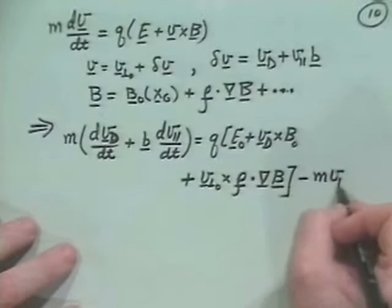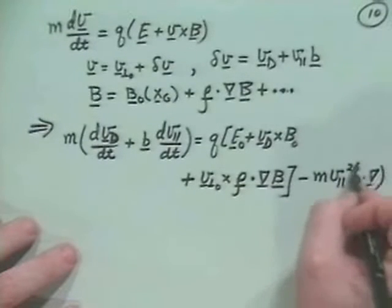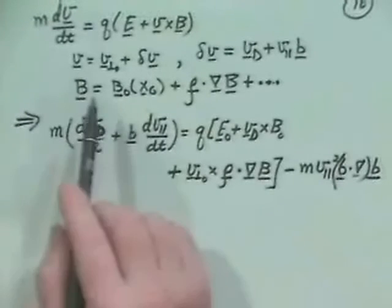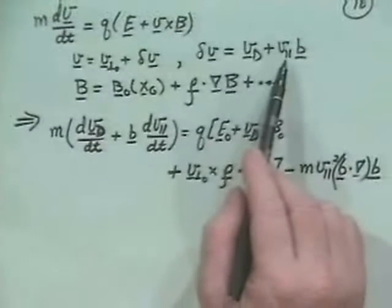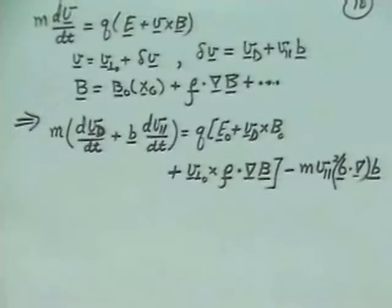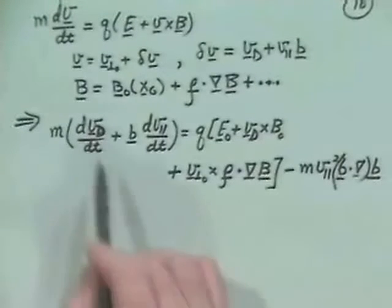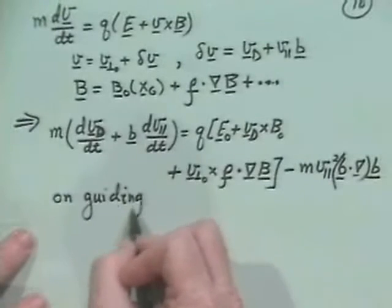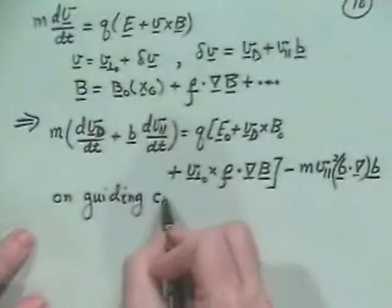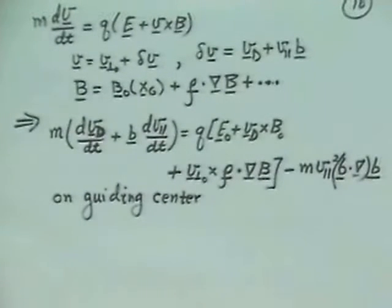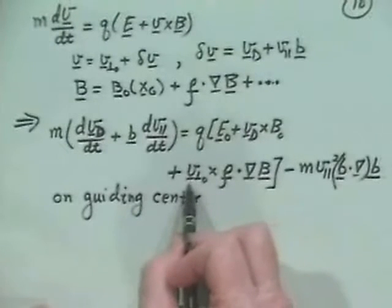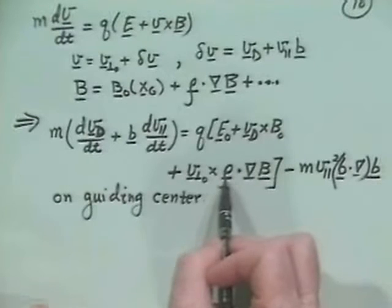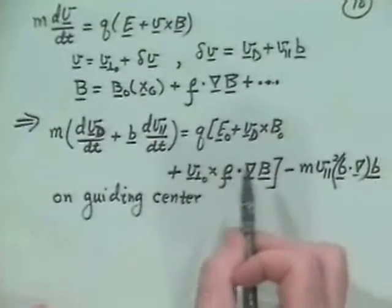And so what you get out of this is an equation that looks like this: m dv_drift/dt plus a component along the field line of dv_parallel/dt. And this is equal to q times e_naught, and then you have a v_drift cross b_naught. Then we have, still inside that square bracket, the v_perp_naught cross, and then a very ugly term, rho dot gradient of b, that tensor. And then we have a minus m v_parallel squared b dot del b.